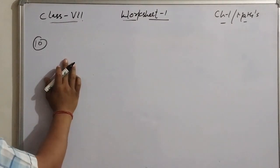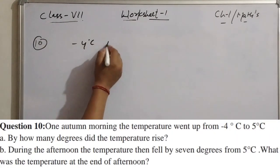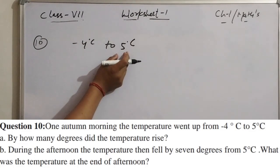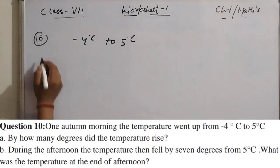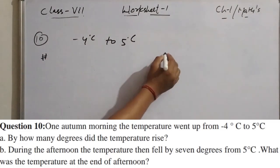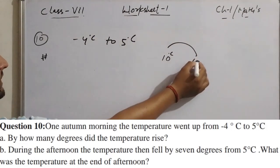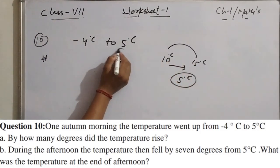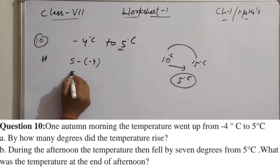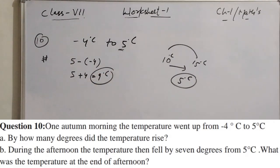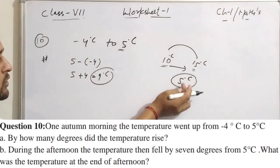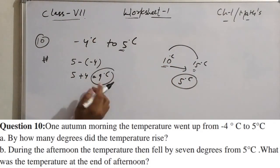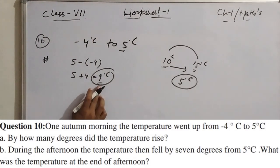Question 10: One autumn morning the temperature went up from −4 degrees Celsius to 5 degrees Celsius. How much did the temperature rise? The change is 5 minus (−4), which equals 5 + 4 = 9 degrees Celsius. So the temperature rose by 9 degrees Celsius.